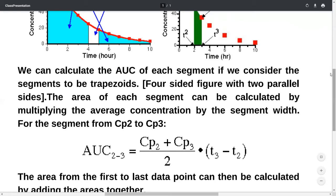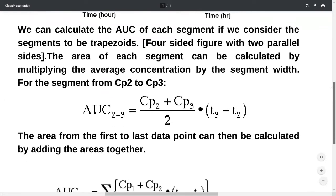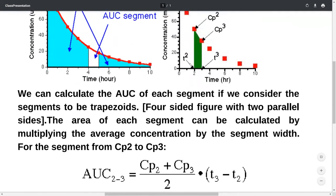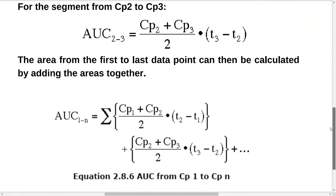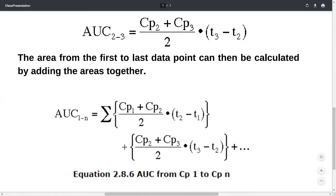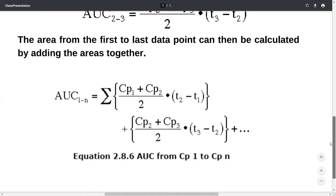The area from the first to last data point can then be calculated by adding the areas together. Here we've taken into account one particular area. We can calculate all the areas together and get the total AUC. AUC 1 to n can be calculated as a summation of individual areas till point n.